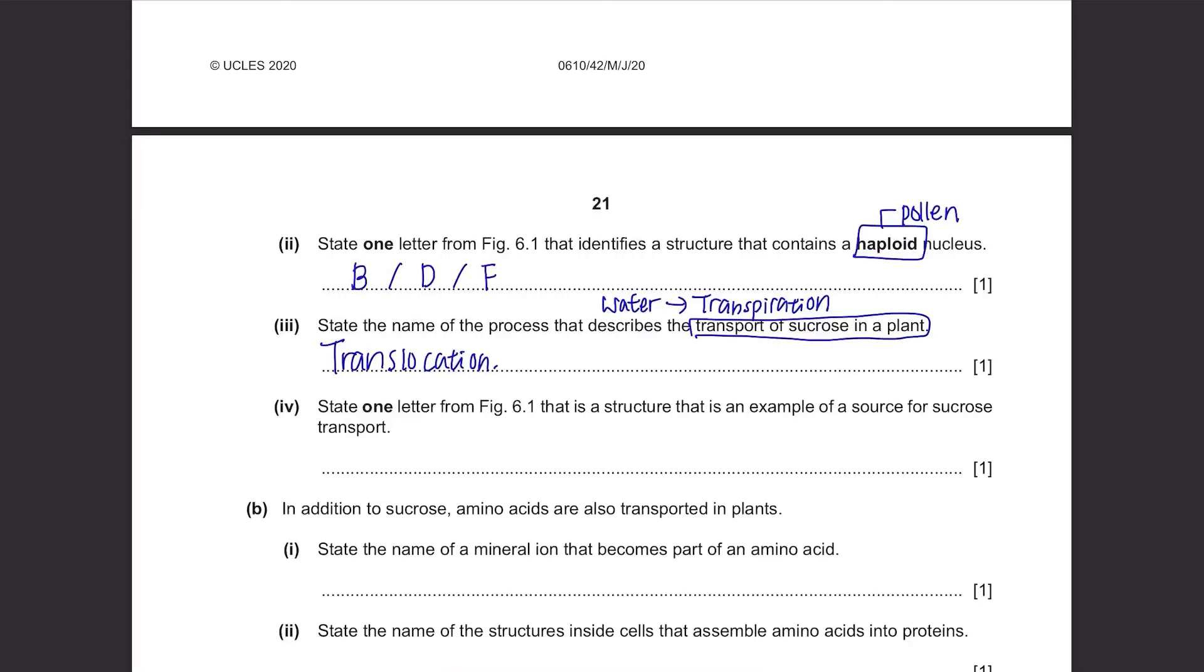State one letter from figure 6.1 that is a structure that is an example of a source for sucrose transport. Sucrose is made of glucose and fructose and glucose is produced in leaves. So the source of sucrose is H, the leaves.